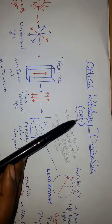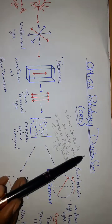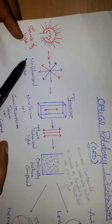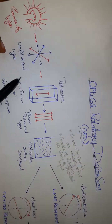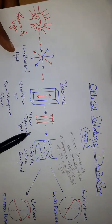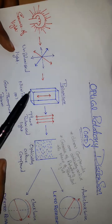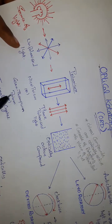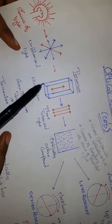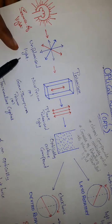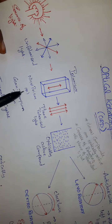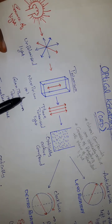Now, coming to the concept of ORD — optical rotatory dispersion. From the source of light, we get unpolarized light, and with the help of a polarizer, we convert it to plane polarized light. The polarizers used are a Nicol prism, Glan-Thompson prism, or tourmaline crystal. Nicol prism is most commonly used.